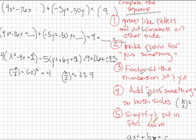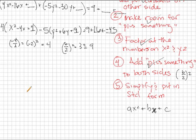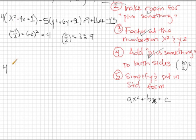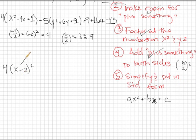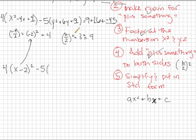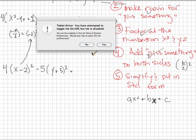Step number five: we're going to simplify and put it in standard form. The left-hand side now has perfect squares. X squared minus 4X plus 4 is really X minus 2, squared. If you're not sure what the number inside the parentheses should be, it came from B over 2. Then we have minus 5 times Y plus 3, squared — the 3 came from B over 2 as well, where B over 2 is 3. On the right-hand side, 9 plus 16 minus 45 equals negative 20.